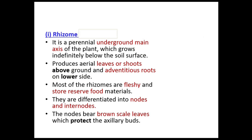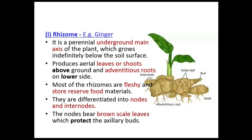The first underground stem type is the rhizome — a prostrate structure where the main axis of the plant grows indefinitely below the soil, producing leaves or shoots above and adventitious roots below. Most rhizomes are fleshy and store reserve food material. The name 'rhizome' comes from the fact that it looks like a root but is actually a stem. Rhizomes differentiate into nodes and internodes with brown scale leaves that protect the axillary bud.